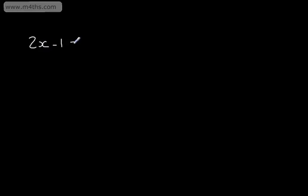In this video, we're going to start looking at solving simultaneous equations. In the past, most of the equations we've seen have only had one unknown, or one variable. An example might be 2x minus 1 is equal to 9, so the only unknown we have is x.